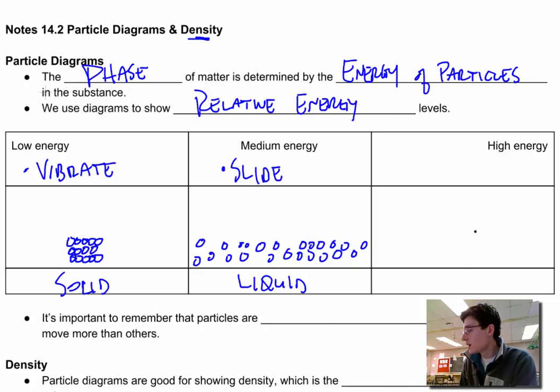And then finally, in high energy, these particles are flying around. Well not highest, there is a phase of matter past a gas. We're not going to get into that. It's called plasma. Like the sun is made of plasma. But these are very high energy. These particles, they are totally spread out from each other. They are not interacting at all. They have a lot of energy flying everywhere. And this one represents a gas.